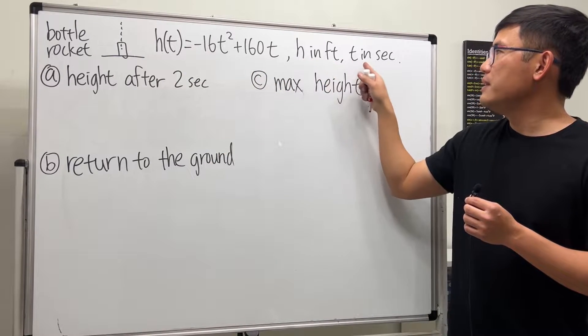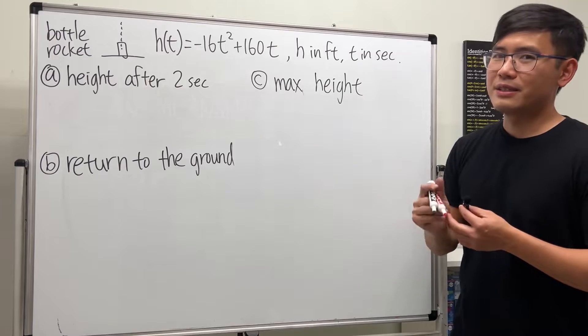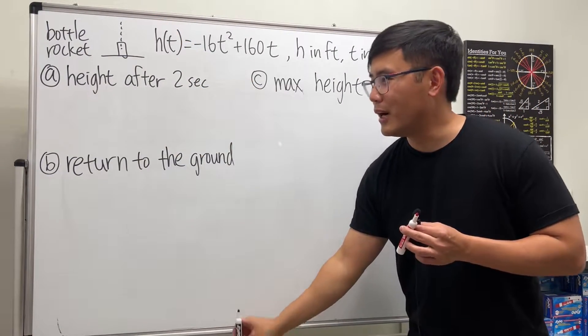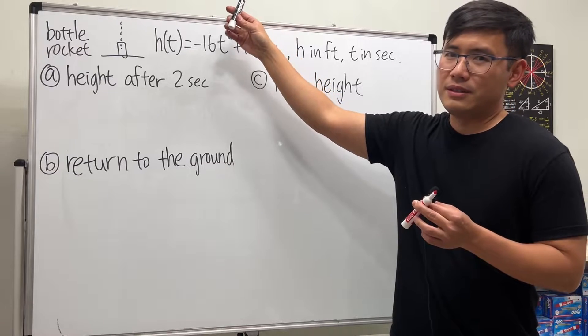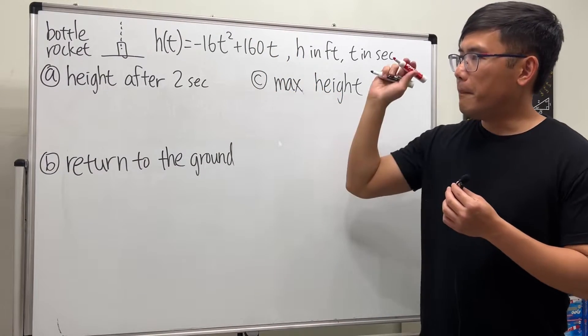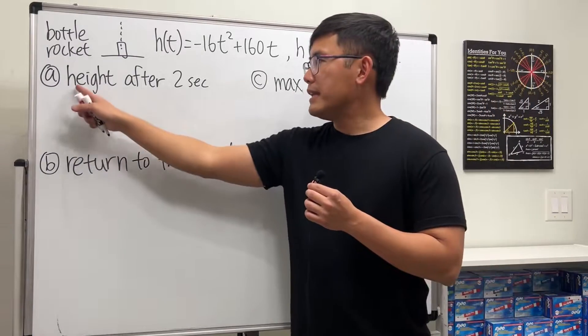The height h is measured in feet and time is measured in seconds. The bottle rocket is just like this marker - it's going to go up and then at some point it's going to fall down. For part A, we are going to find the height of the bottle rocket after two seconds.